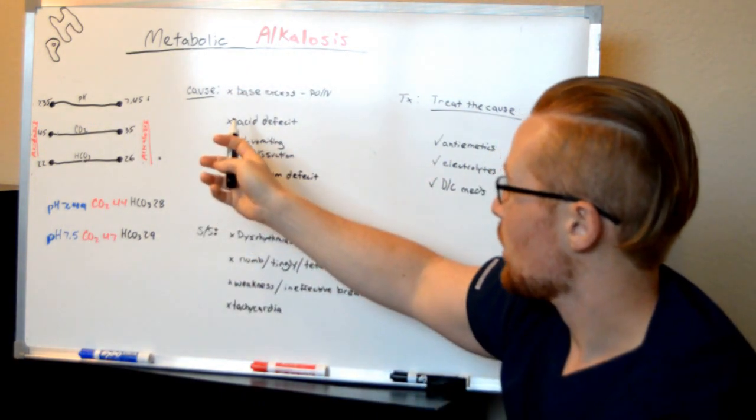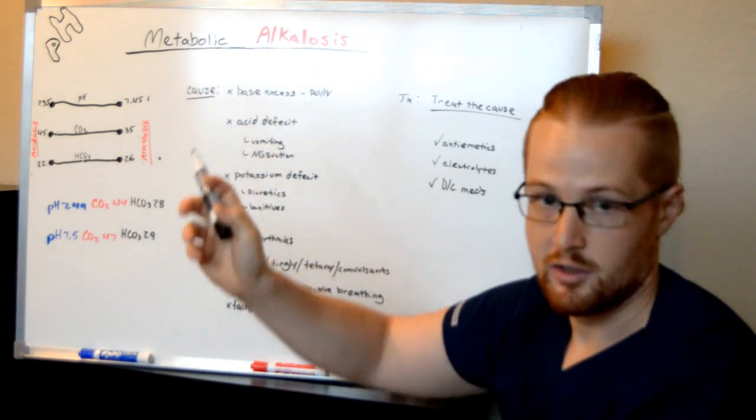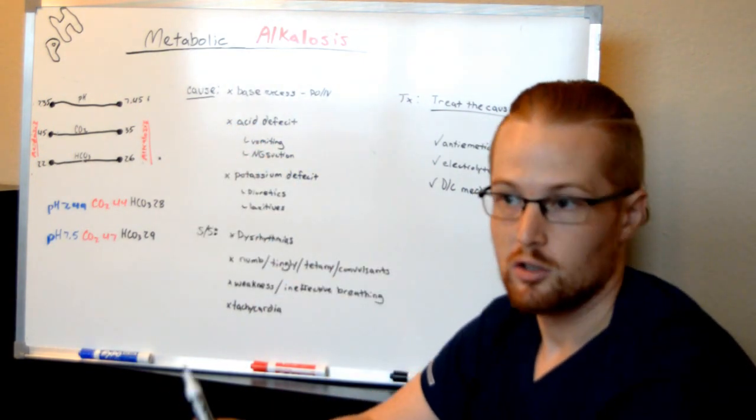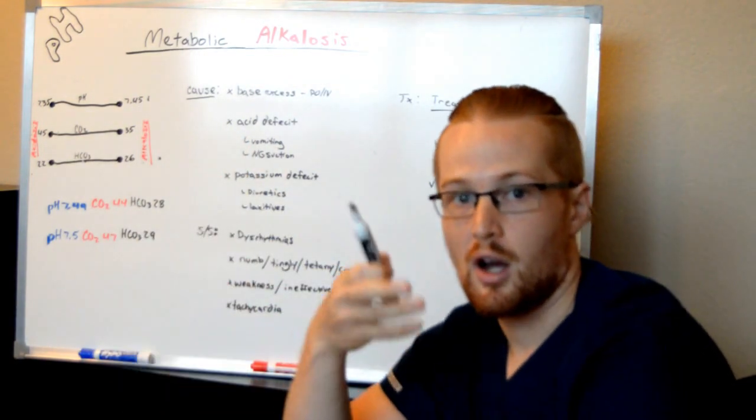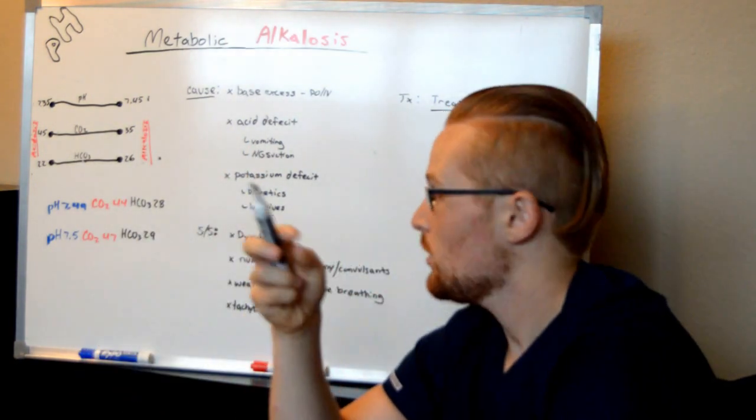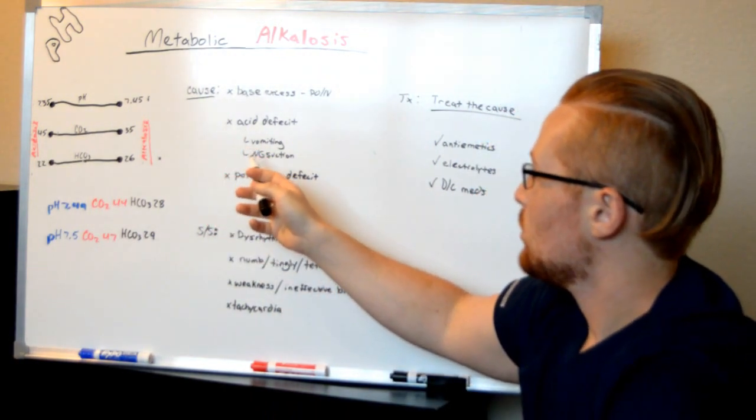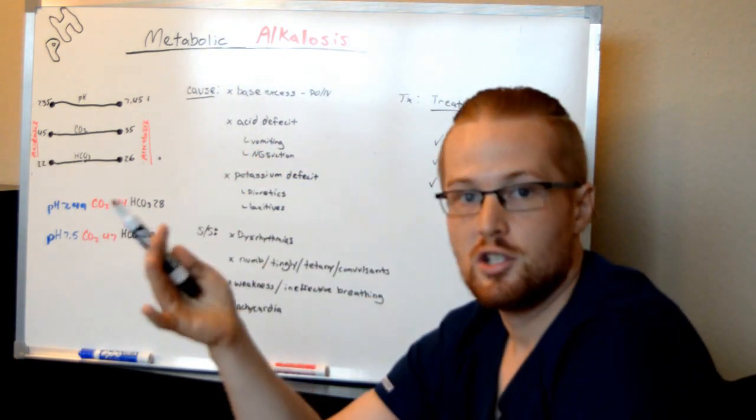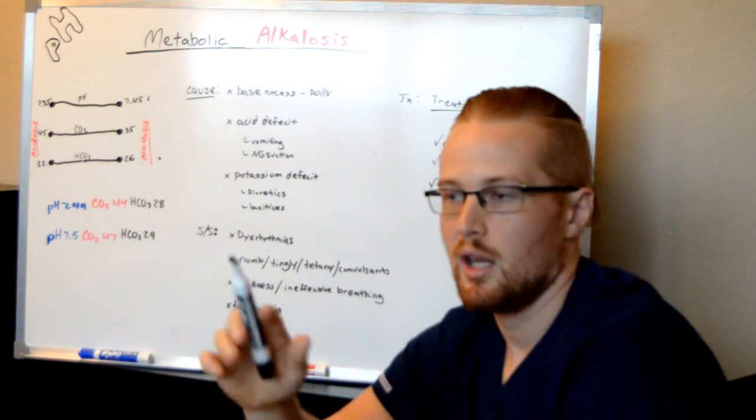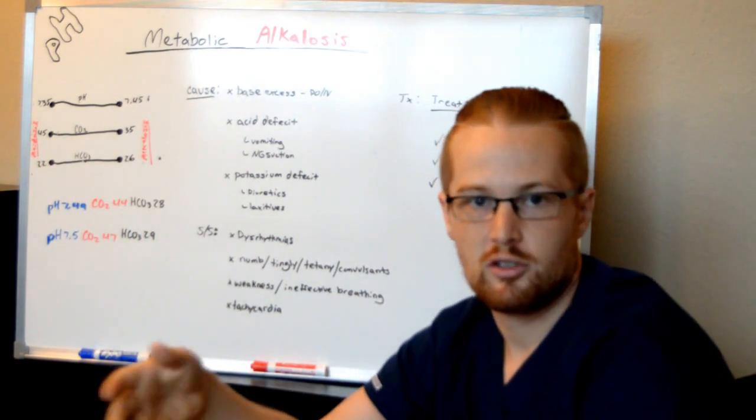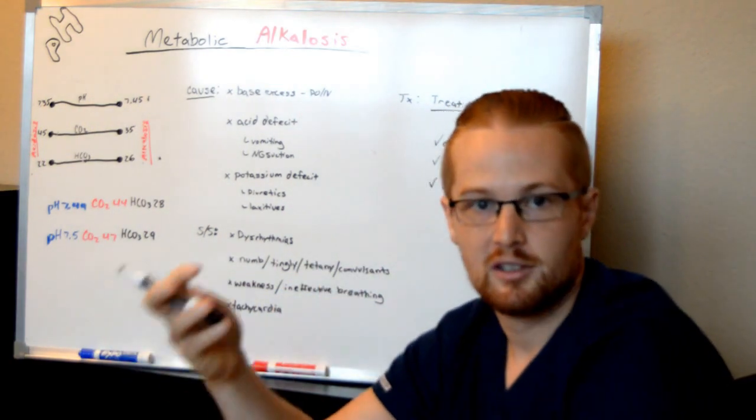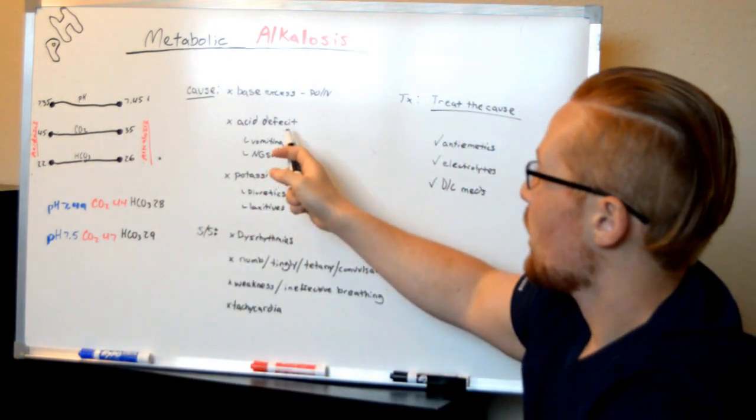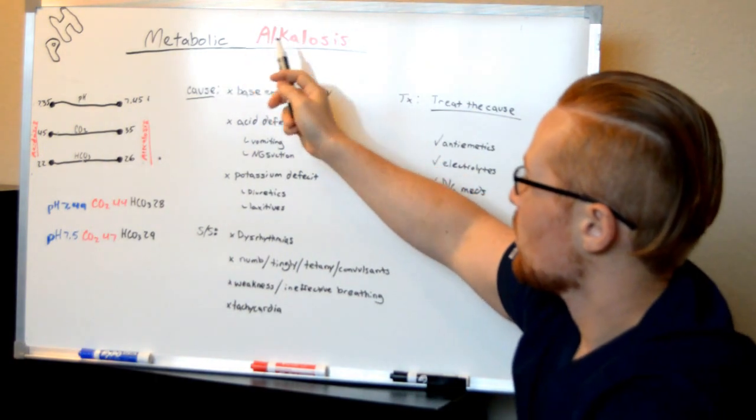The other cause would be an acid deficit, not enough acid. What can cause you to lose acid? Stomach acid. If you're vomiting constantly, that could be one cause. Or if a patient has an NG tube with suction for a bowel obstruction and bowel rest, it could be sucking out all that stomach acid. A couple days later, they don't have enough acid and now have metabolic alkalosis.